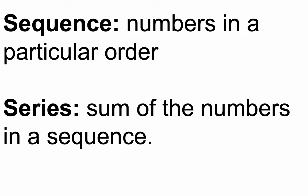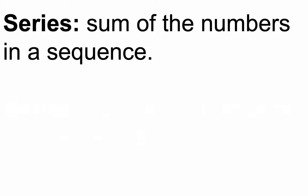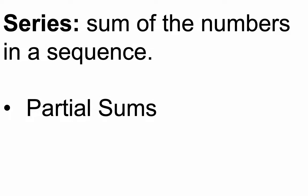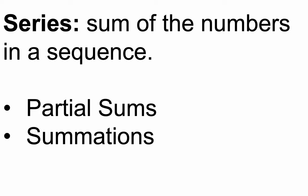A sequence is numbers appearing in a particular order. A series is when you add those numbers. When we sum up the numbers, how many do we add? It depends on the problem — we don't often add all the numbers; we add part of them. So we have what are called partial sums. Summation gives us a more advanced way to write that in notation, using sigma. The idea is that you want to add part of the sum — a certain kind of notation that ends up being really helpful.